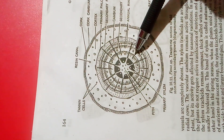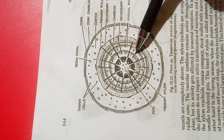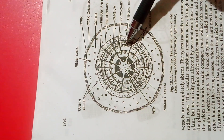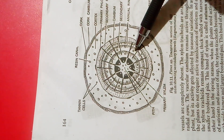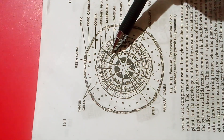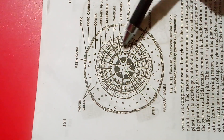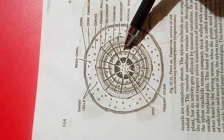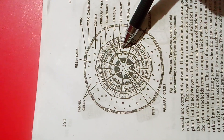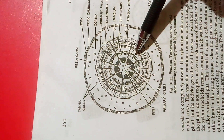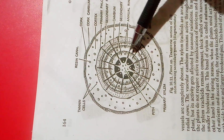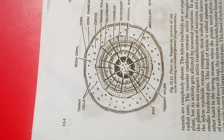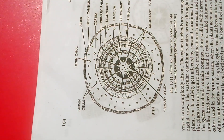In spring, when plants need active translocation of nutrients and ascent of sap — that is, the upward movement of water and minerals — the xylem tracheids become broad and thin-walled with a wide lumen and larger bordered pits. This band of xylem is referred to as spring wood.